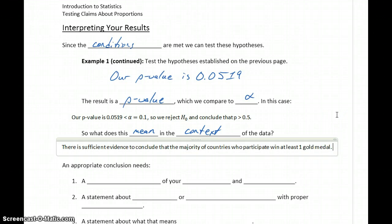And then in this case, we also want to say something about whether the claim was supported or not. So the claim was stating that the majority of countries would win one gold medal. So we can say, in this case, the claim is supported.